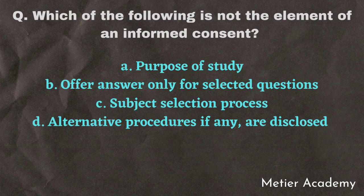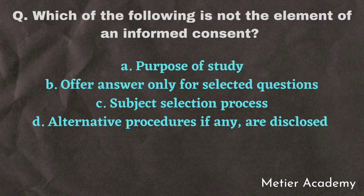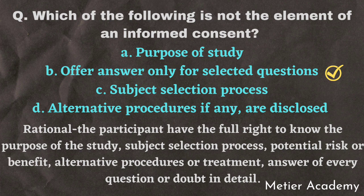The next question is: which of the following is not an element of informed consent? Options are purpose of study, offer answer only for selected questions, subject selection process, and alternative procedure if any are disclosed. This question was asked in AIIMS Young Nursing Officer Exam 2018. The correct answer is Option B. Participants have the full right to know the purpose of study, subject selection process, potential risks or benefits, alternative procedures or treatment, and the answer to every question or doubt in detail.